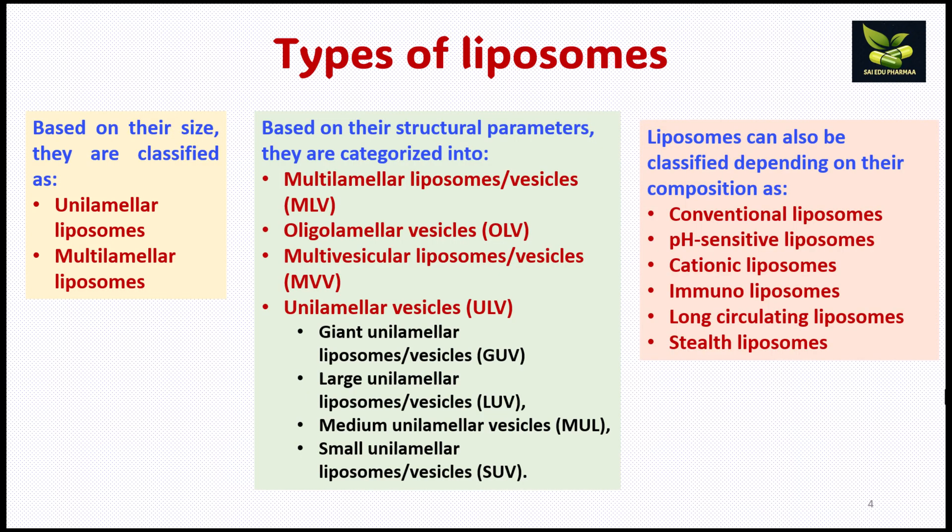What are the various types of liposomes? First, based on their size, we can classify them as unilamellar and multilamellar. Based on their structural parameters, they are categorized into multilamellar, oligolamellar, unilamellar, and multivesicular.